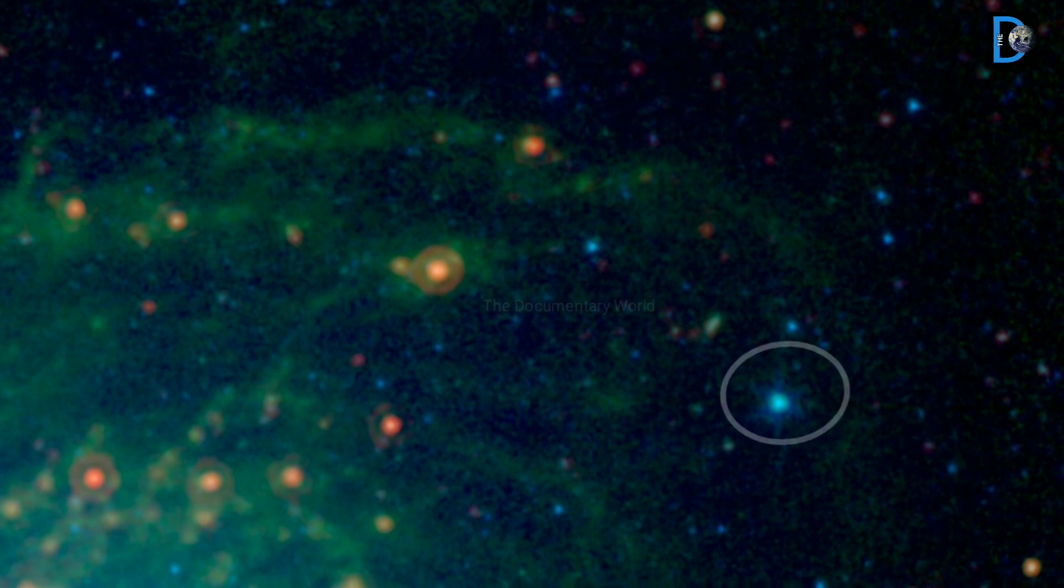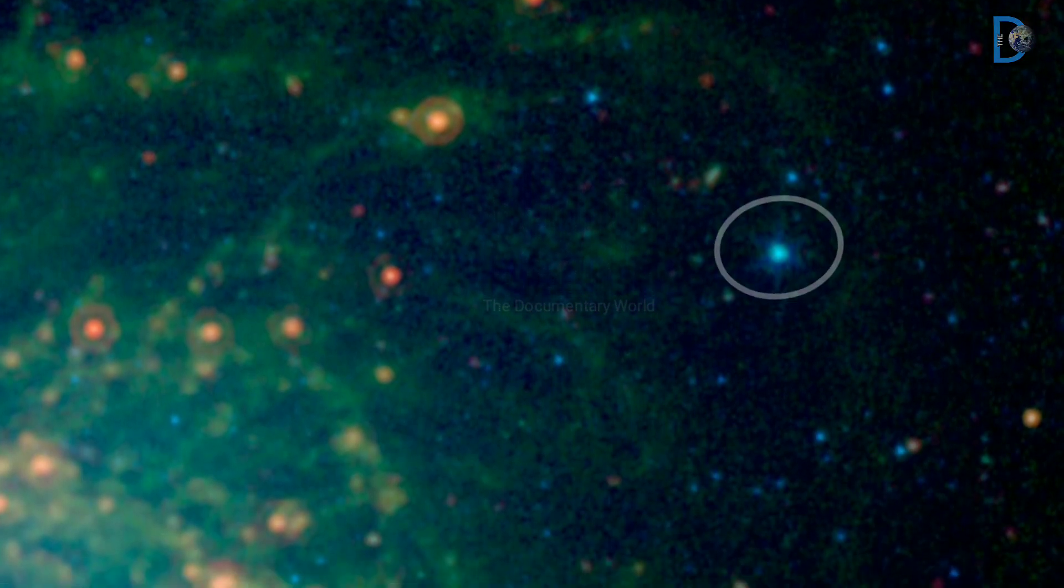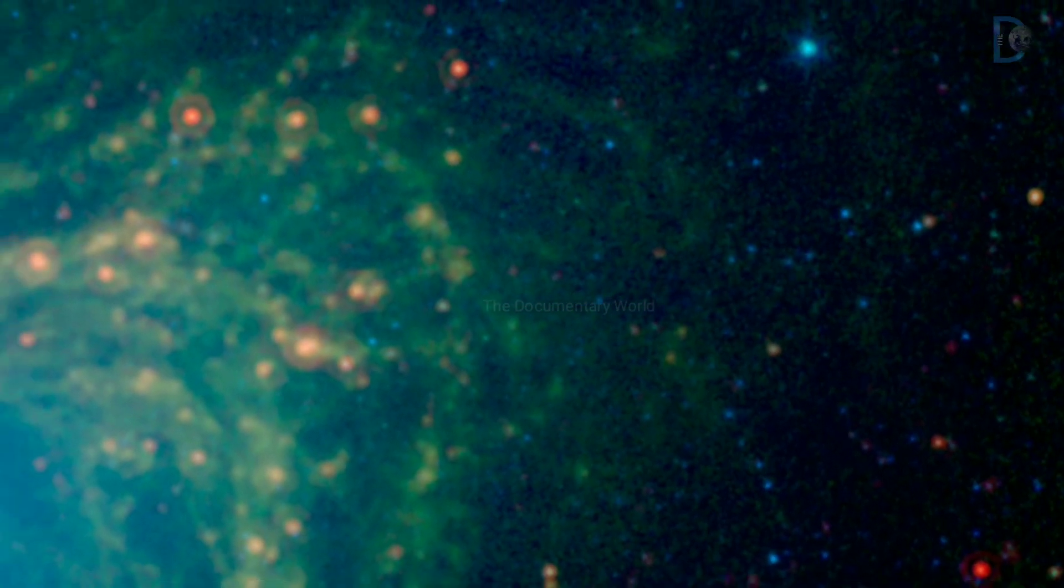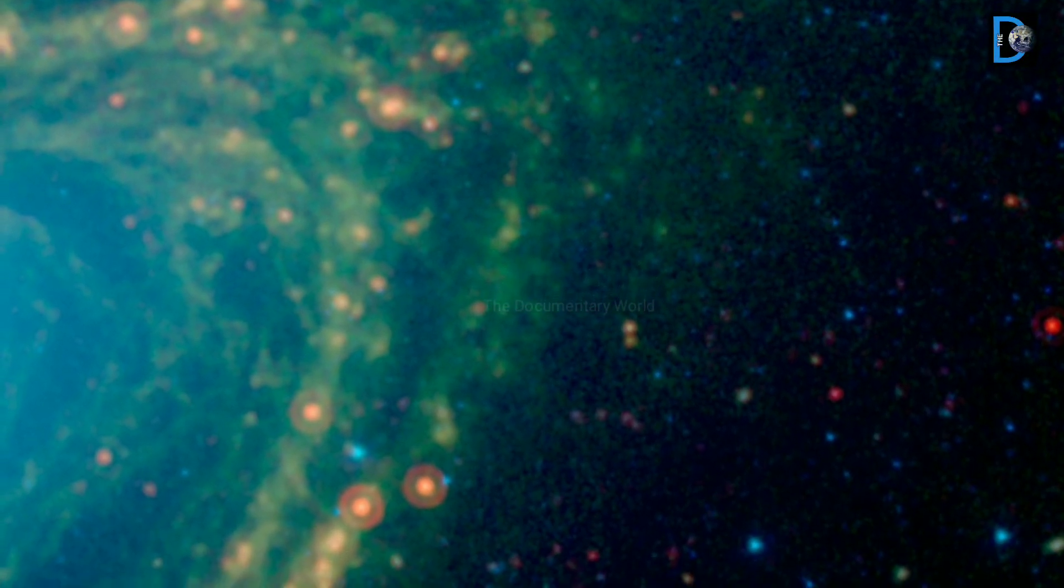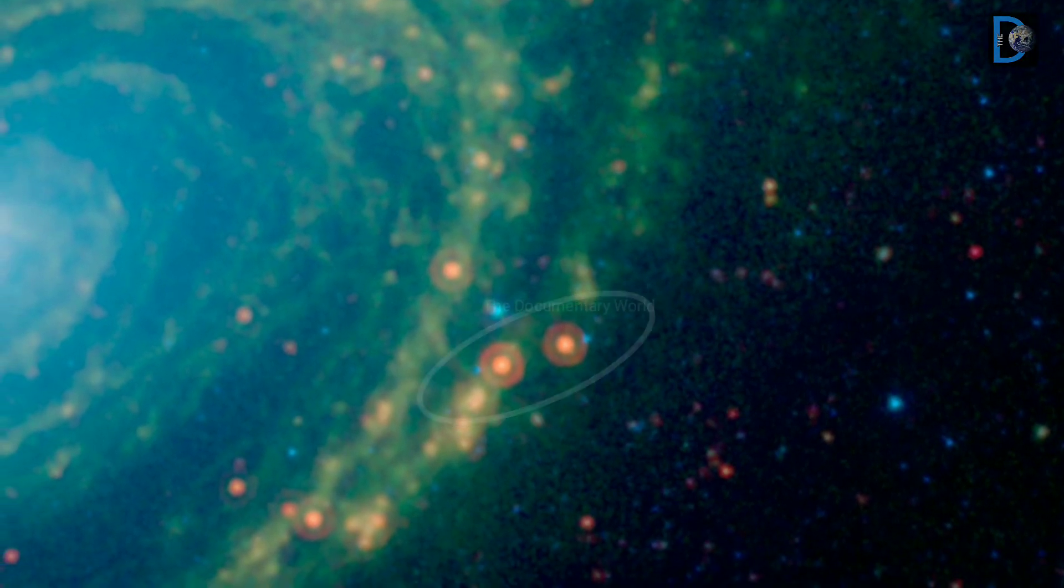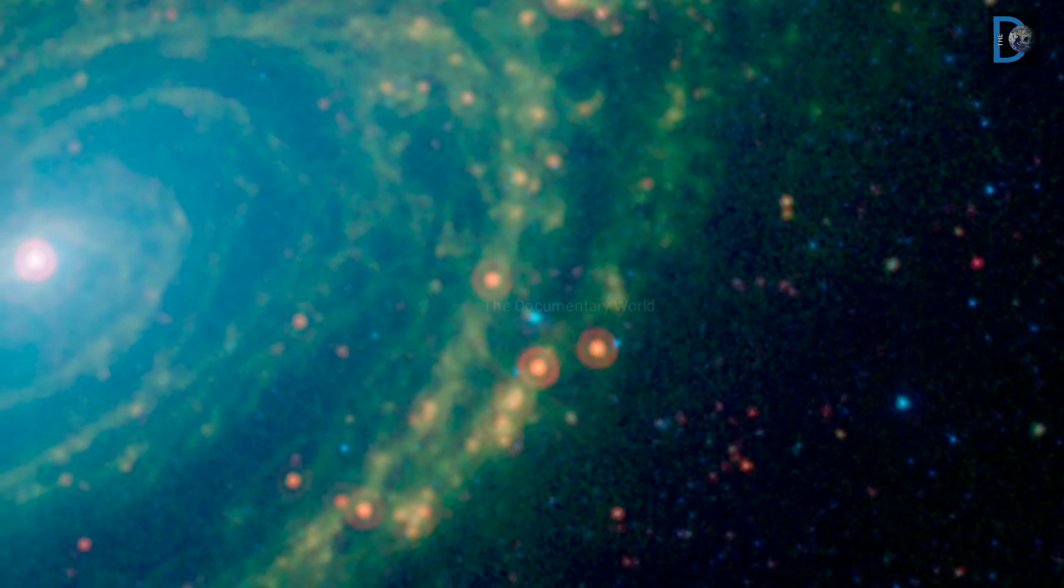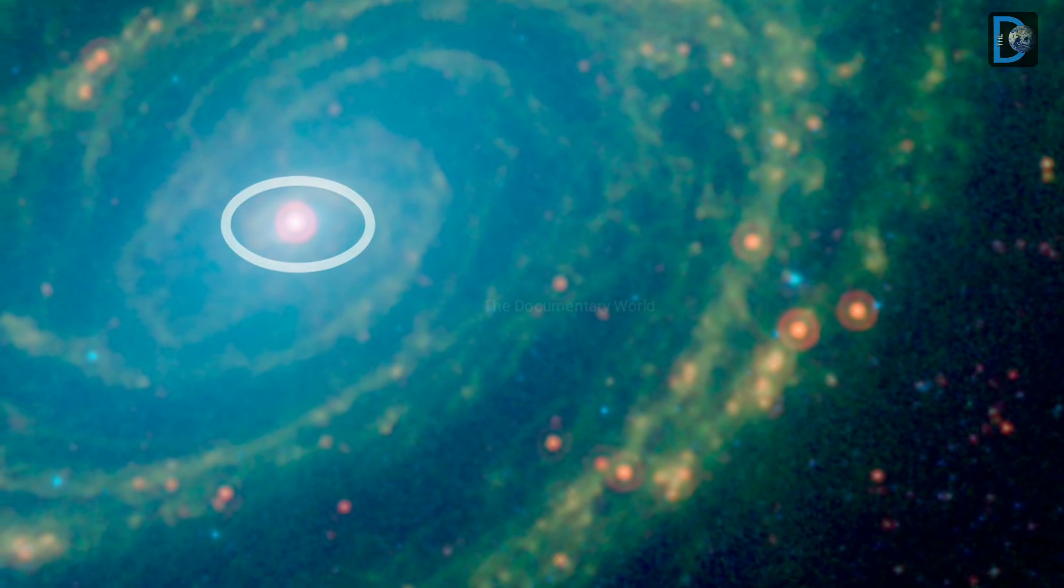Friends, this Spitzer infrared image is a composite mosaic combining data from the infrared array camera at wavelengths of 3.6, 4.5 microns (blue, cyan), and 8 microns (green), with data from the multiband imaging photometer at 24 microns (red).